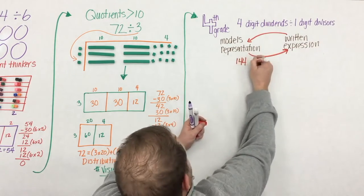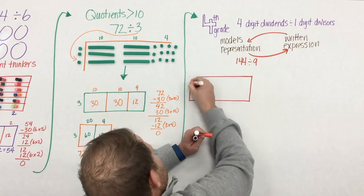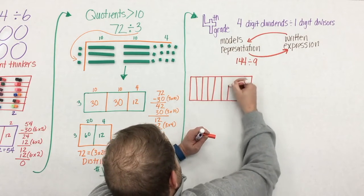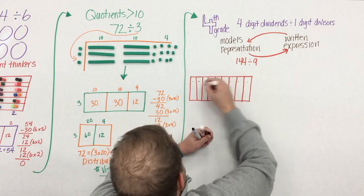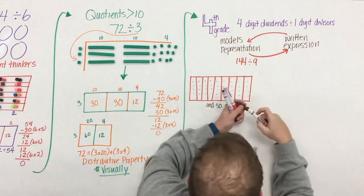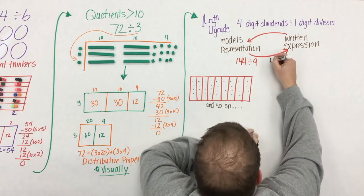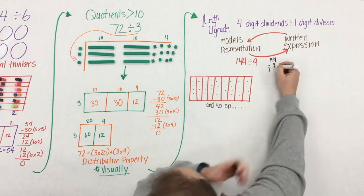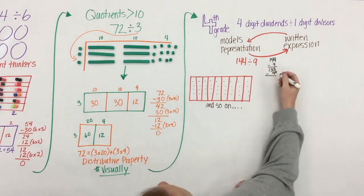But one thing has to be taking place, and that's continually making the connection between models and representations and written expressions. Here we'll take 144 and divide it into nine groups, one into each group, and so on. Again, that fair share model.